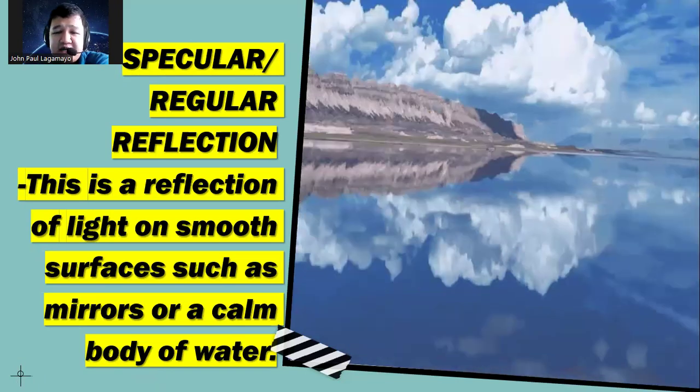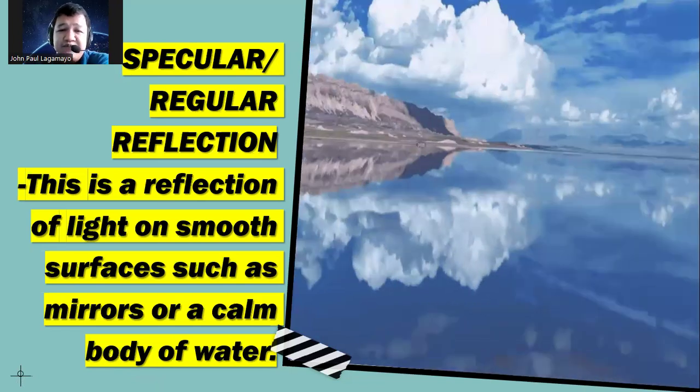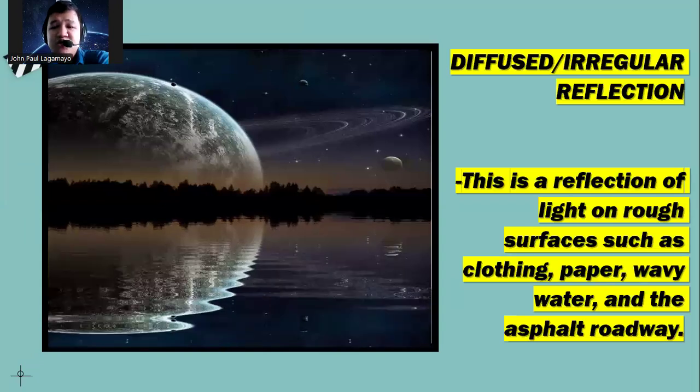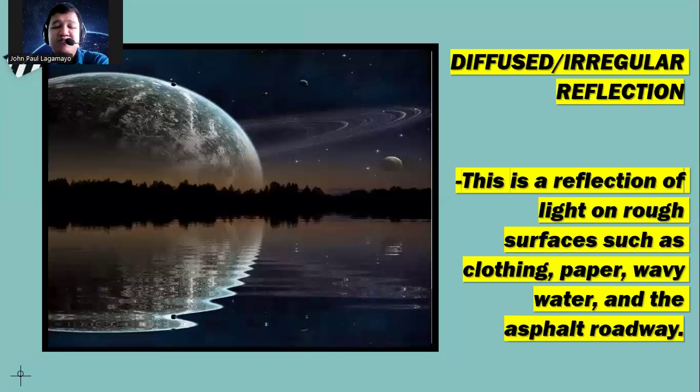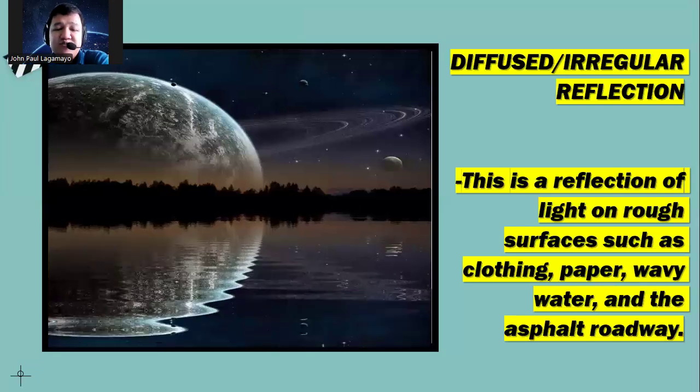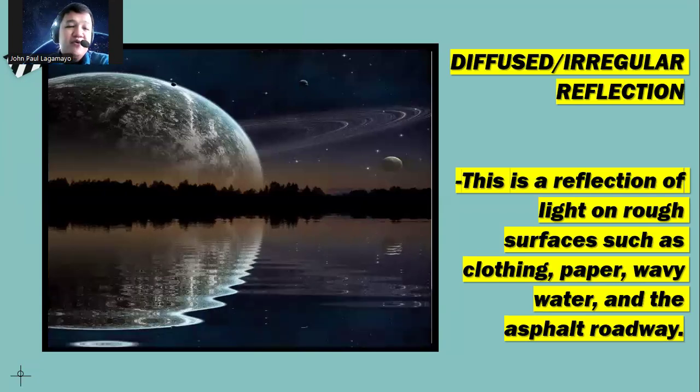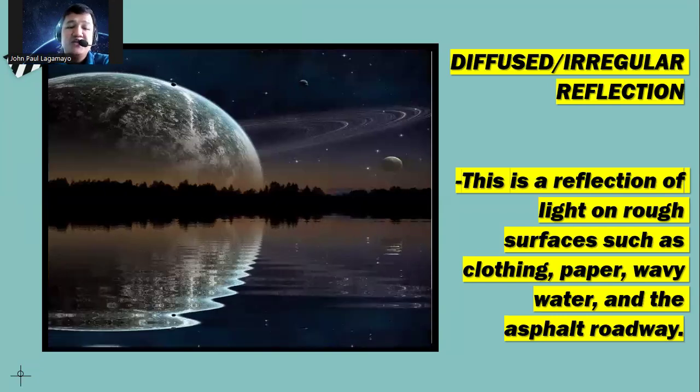In fact, when we talk about the diffused or irregular reflection, this is a reflection of light on rough surfaces such as clothing, paper, wavy water, and asphalt roadway. All of the non-shiny objects have the capacity to reflect back in terms of irregular reflection. So the images are different based from the object, and that's our irregular reflection.